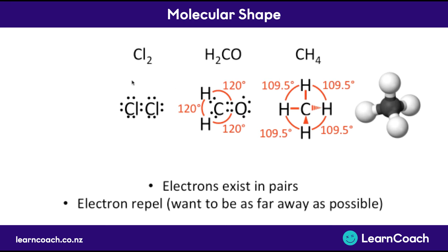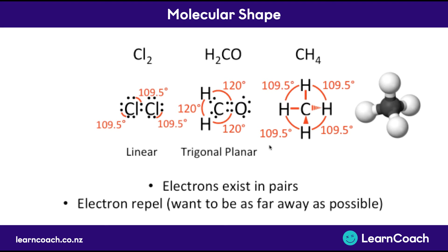If we look back at chlorine, there are four different electron pairs even though there's just one bond. Each of these electron pairs will want to be as far away from the others as they can, so they will also be 109.5 degrees apart — the same as CH4. With only two molecules joined by one bond, this makes a linear straight shape. Whereas H2CO creates a trigonal planar shape — planar means flat, and trigonal means triangle.